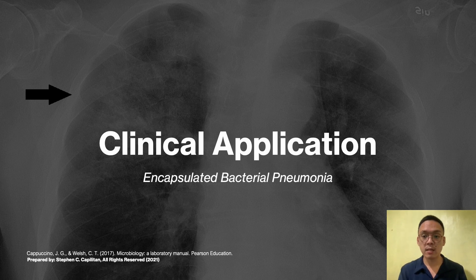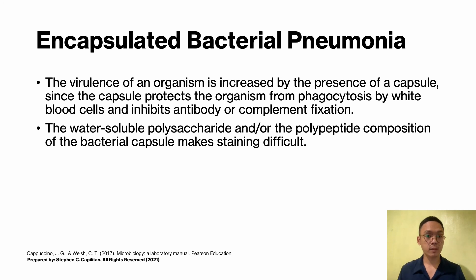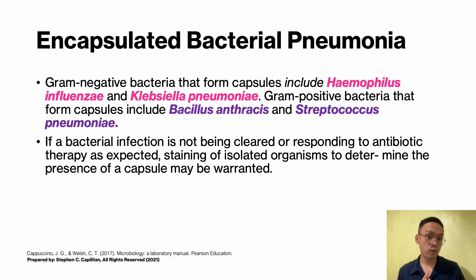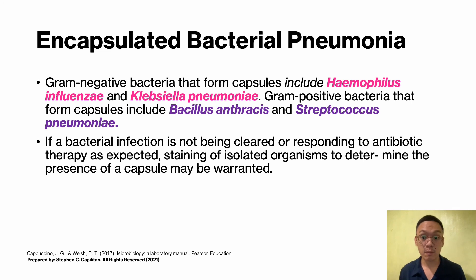In clinical application for encapsulated bacterial pneumonia: the virulence of an organism is increased by the presence of a capsule, since it protects the organism from phagocytosis by white blood cells and inhibits antibody or complement fixation. The water-soluble polysaccharide composition of the bacterial capsule makes staining more difficult. Gram-negative bacteria that form capsules include Haemophilus influenzae and Klebsiella pneumoniae. Gram-positive bacteria that form capsules include Bacillus anthracis and Streptococcus pneumoniae. If bacterial infection is not responding to antibiotic therapy as expected, staining to determine the presence of a capsule may be warranted.